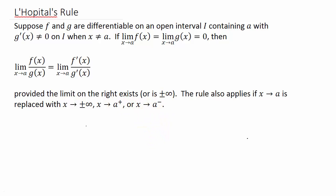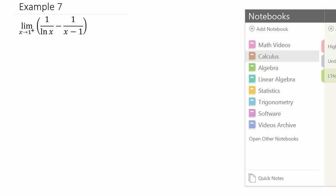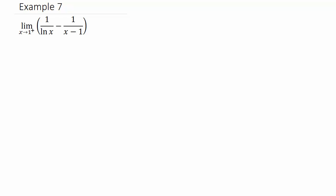Alright, so let's take a look at this example — it'll be a little bit different than the other ones. We have the limit of 1 over natural log x minus 1 over x minus 1, and that's the limit as x goes to 1 from the right.